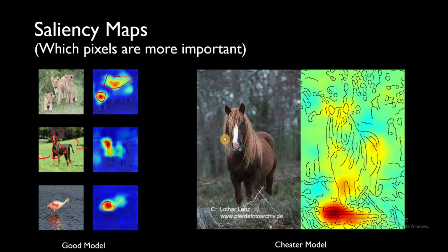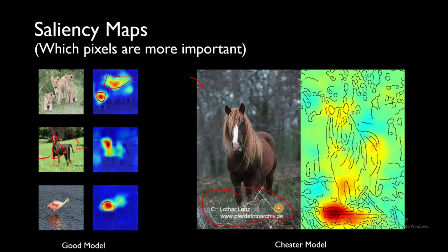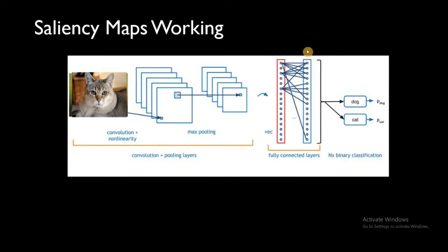Here is an example of a 'cheater model'. This is a photo of a horse and the neural network was predicting it correctly, but when you ask for an explanation of which features it's looking at, it's looking at the watermark. The problem was that during training, most horse class images had a watermark, so the model learned to look at the watermark rather than the horse itself. This kind of model won't perform well in the real world, which is why saliency maps are an important way to check your model's consistency.